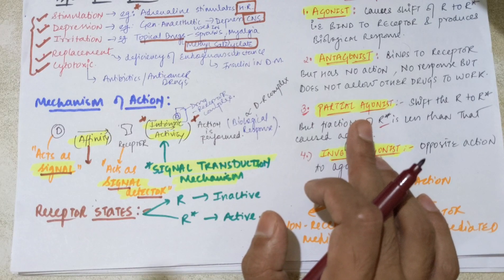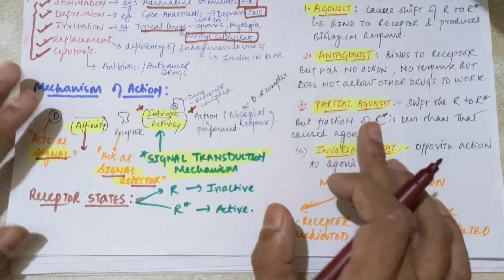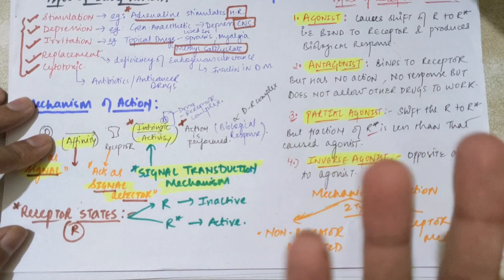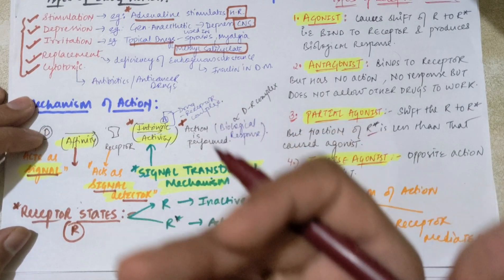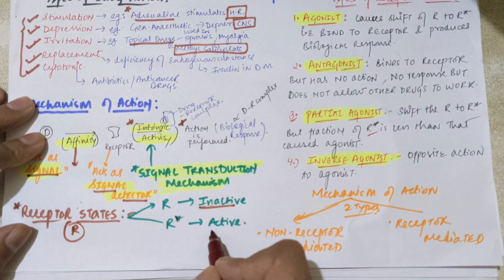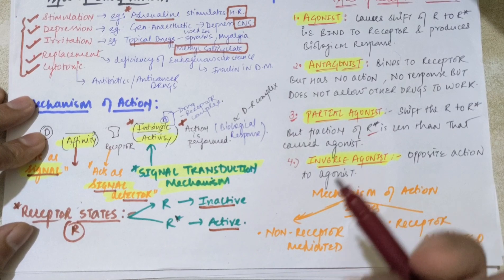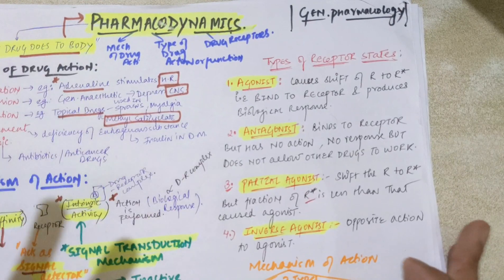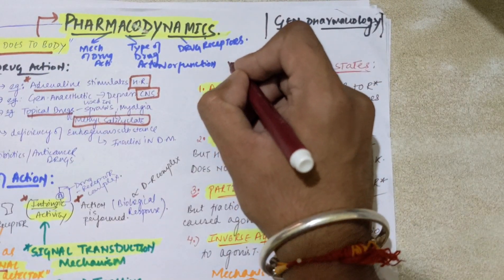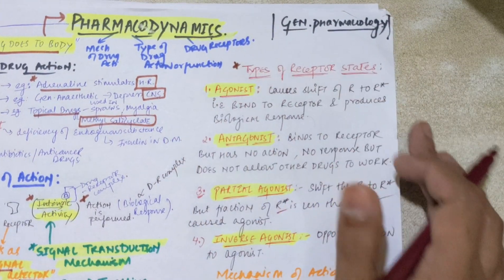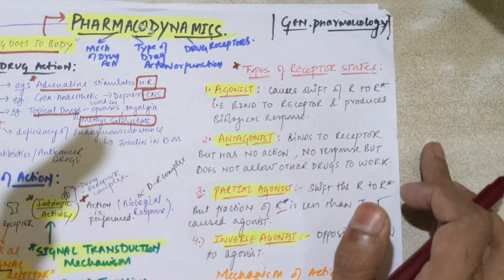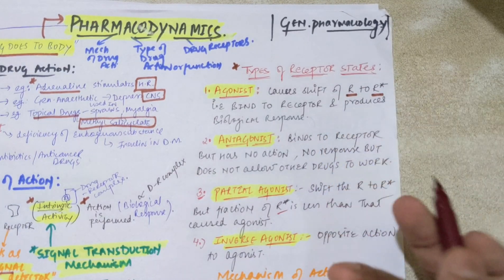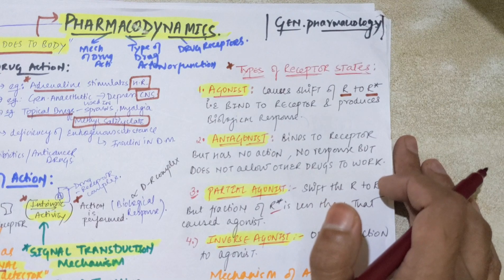Now, talking about receptors, we have some receptor states. Consider R denoting the receptor. A receptor can be inactive (R) and after interaction with a drug can become active (R*). We have types of drug-receptor states. The first state is the agonist state. The meaning of agonist is causing the shift of the inactive form of the receptor to the active form — from R to R*. The agonist binds to the receptor and produces a biological response.